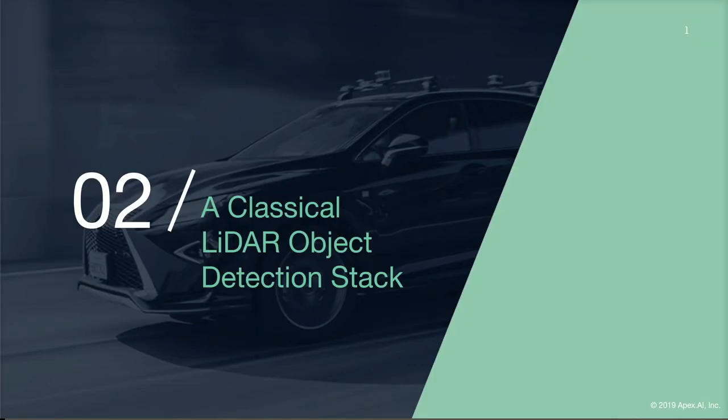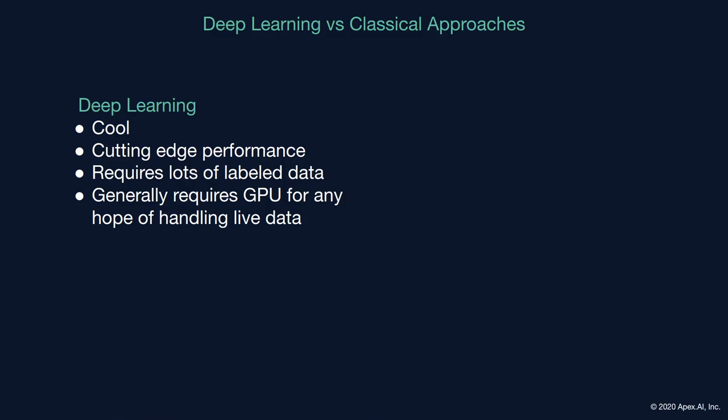In this section, students will learn about the architecture of the object detection stack in Autoware Auto, and the motivation behind it. Recently, most artificial intelligence problems have two general categories of solutions: one being deep learning, and the other being classical approaches. Most work in these AI problems recently has been in the deep learning realm, which is very interesting and generally provides cutting-edge performance.